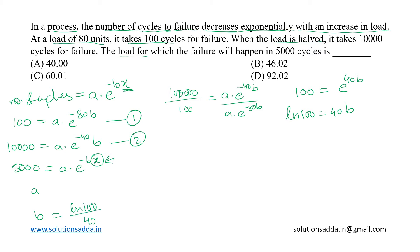Now we shall put this value of b in equation 1 to get the value of a. That will give us 100 equal to a times e raised to minus 80 times ln 100 upon 40, which equals a times e raised to minus 2 ln 100.